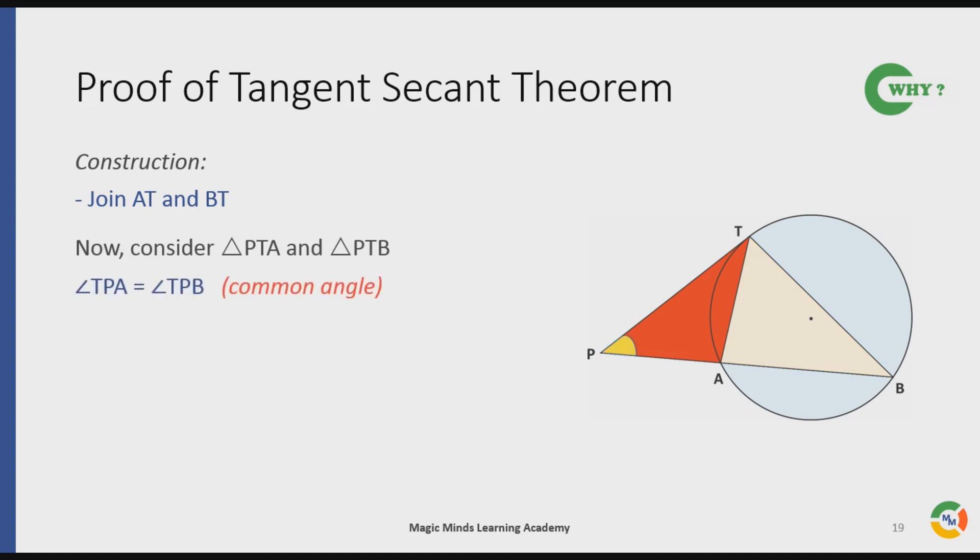As both are common angles for both triangles, this angle is shown in yellow color in the figure on the right. Now angle PTA is equal to angle PBT.